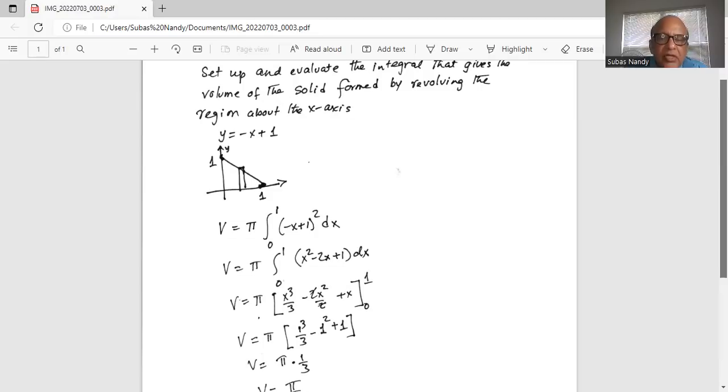Now we substitute the limits. Starting with the upper limit: one cubed over three minus one squared plus one. The lower limit gives zero because all x terms are zero.